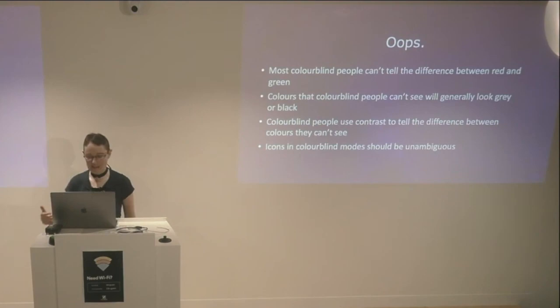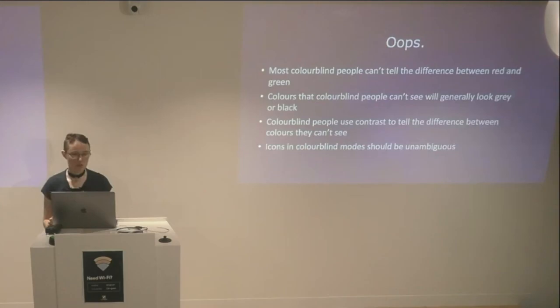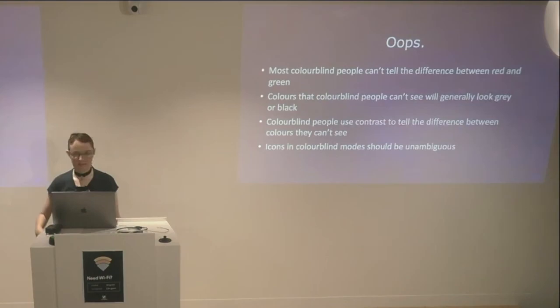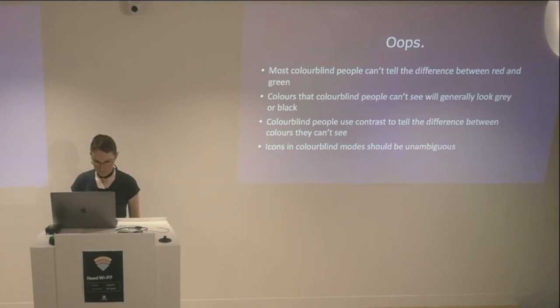Some people will use icons to indicate information without using only colour, and that's good. But if you're going to do that, make sure the icons are unambiguous. I have actually seen a colour blind mode where the three icons were a square, a rounded rectangle, and a circle — which is not as good as if you had, say, a heart, a star, and a lightning bolt, which would clearly indicate what those things are doing.